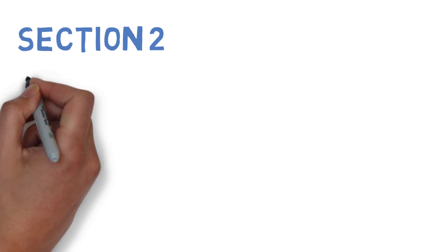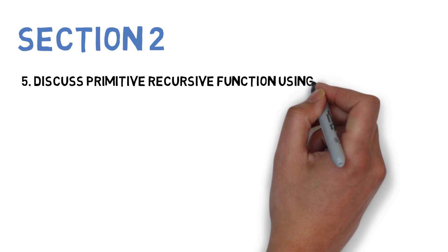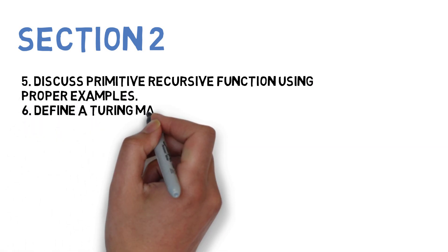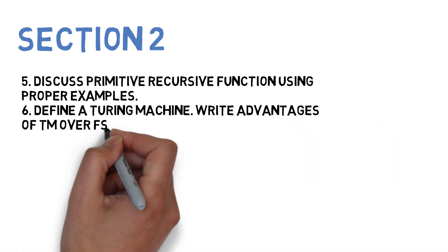For Section 2, you'll be discussing primitive recursive function using proper examples. Second one is define a Turing machine or a machine with advantages over FSM.